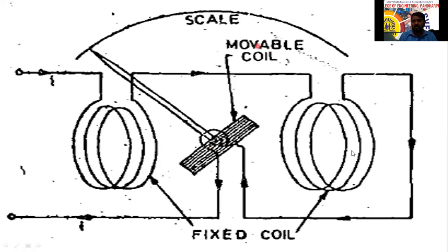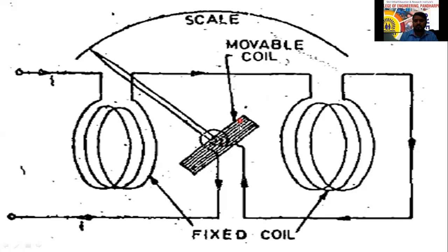The instrument has one fixed coil split into two halves, and one moving coil placed in between those two halves. The moving coil is connected to the spindle, which is connected to the pointer, along with a spring for controlling force and an air damping system for damping.